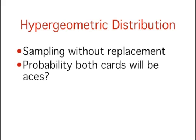Given this sampling procedure, what is the probability that exactly two of the sampled cards will be aces, given that four of the 52 cards in the deck are aces?